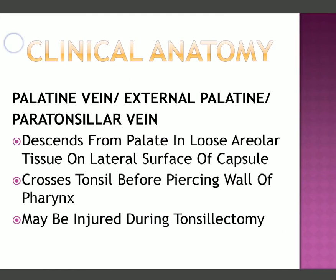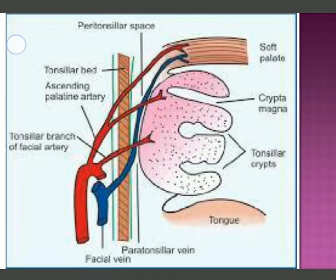There is a vein known as the paratonsillar vein, which descends from the palate into the loose areolar tissue on the lateral surface of the capsule and crosses the tonsil before piercing the wall of the pharynx. This vein is at risk of being injured during tonsillectomy, as it lies on the lateral side of the hemicapsule. Care must be taken to avoid injuring it during the procedure.